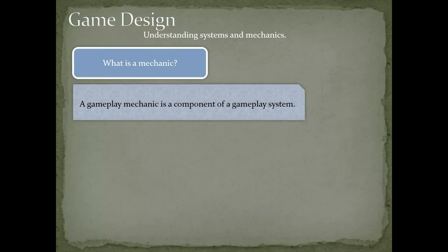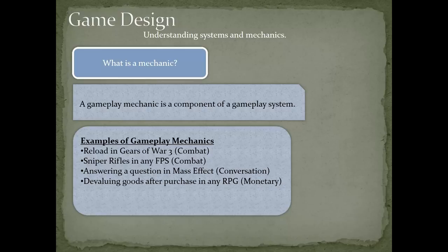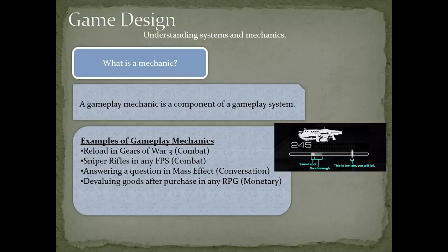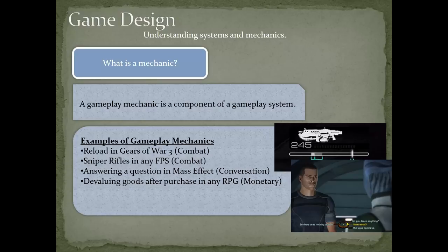So what is a mechanic? A gameplay mechanic is a component of a gameplay system. Let's look at some examples. There's the reload mechanic in Gears of War — if you reload at just the right moment and hit the sweet spot, you get an instant reload. That's a really cool mechanic; it's part of their combat system. Answering a question in Mass Effect — that's a mechanic of the conversation system. And in RPGs, when you devalue goods after you make a purchase, that's a mechanic of the monetary system. The system is the overlying structure — combat system, movement system, navigation system — and the mechanics are the individual components that make up that system.